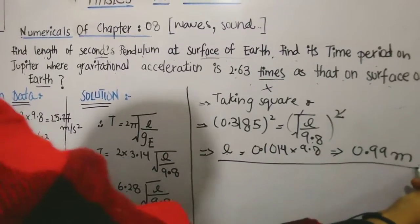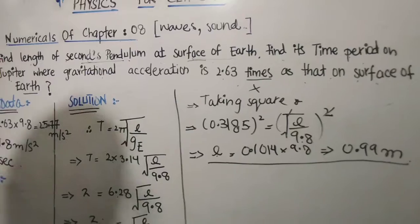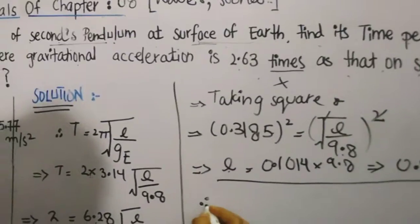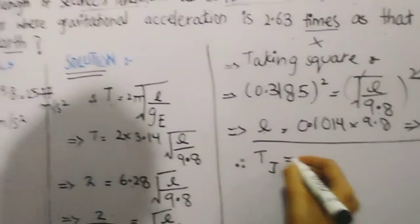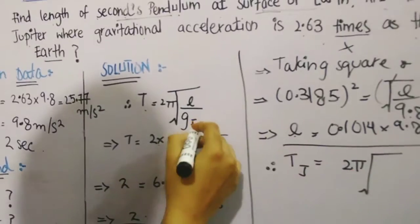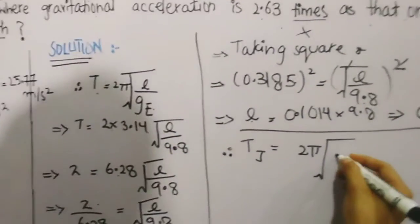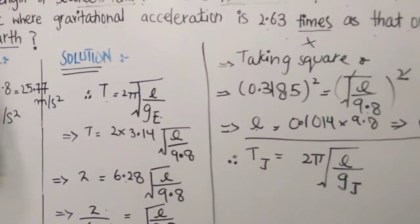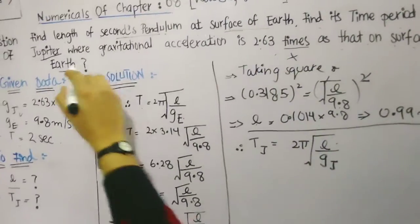Second part is time period on Jupiter. There is no rocket science, we will simply apply the same formula. Time period of Jupiter is equal to 2π√(L/g_J). But what will change in this? The gravity - instead of g_E we will use Jupiter gravity as well. The length is same.